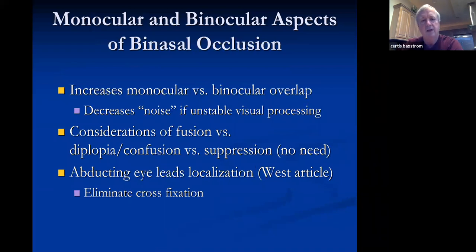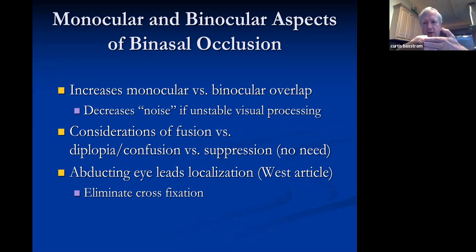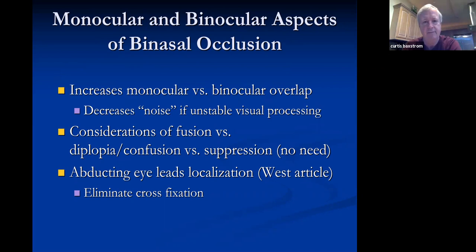Regarding monocular and binocular aspects of binasals: both visual fields — right and left eyes — overlap in the center, but in the periphery you still have monocular vision. We believe the binasal decreases the noise to the brain so that the signal amplitude is much stronger. There are also considerations of fusion versus diplopia and suppression. For a patient with a recent lesion affecting binocular vision, the real concern is not diplopia but confusion — when looking at multiple people, some heads appear shifted onto other bodies.